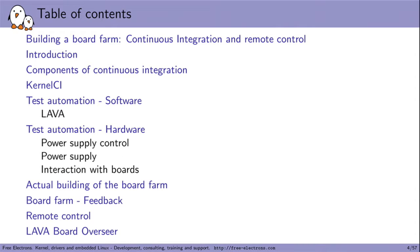Here is the contents we will cover. First, an introduction on what continuous integration is, to have a clear view of what we're talking about. Then we'll see the components of continuous integration and which ones you need to build to have a farm of boards in your company. Finally, we'll dive into what we did at Free Electrons to have a board farm integrated into kernel CI, and also used for other purposes, including a remote control tool we built on top of it.